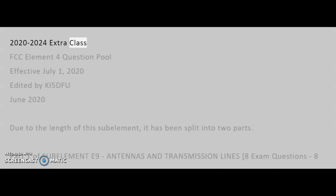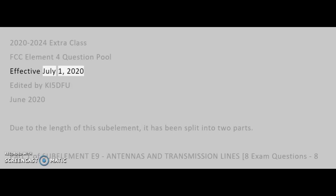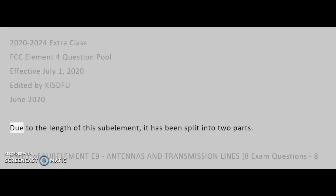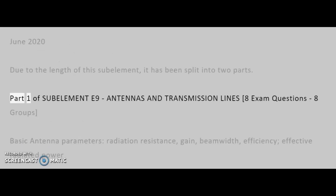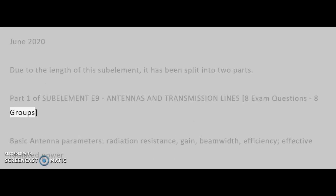2020-2024 Extra Class FCC Element 4 Question Pool, effective July 1, 2020. Edited by KI5DFU, June 2020. Due to the length of this sub-element, it has been split into two parts. Part 1 of sub-element E9: antennas and transmission lines, 8 exam questions, 8 groups.